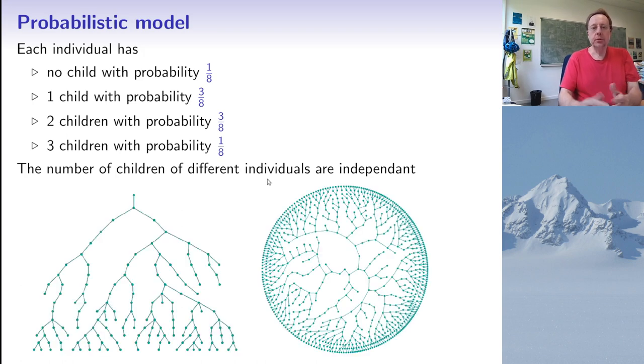So here are two examples of genealogical trees generated with this algorithm. So at the left, I've shown it in a linear fashion with time going from top to bottom. And at the right, I've shown a similar tree, but now using a polar representation, because there's more room and space in that way.